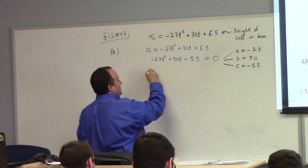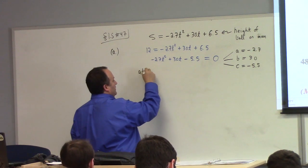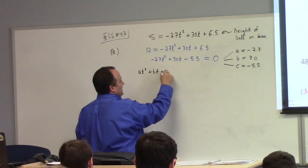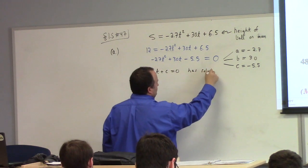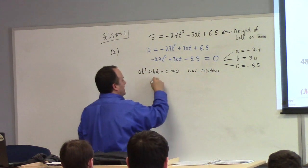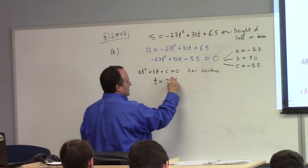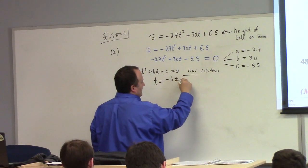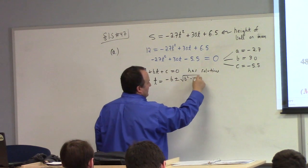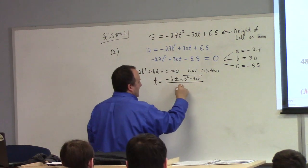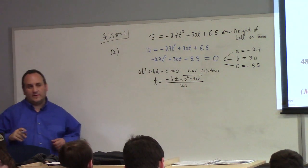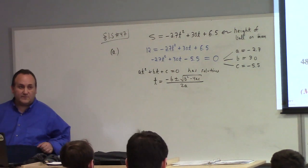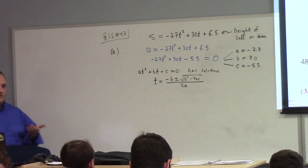What did the quadratic formula state? The quadratic formula states that A T squared plus B T plus C equals 0 has solution T is equal to minus B plus or minus the square root of B squared minus 4AC all divided by 2A. We all but derived this last class.